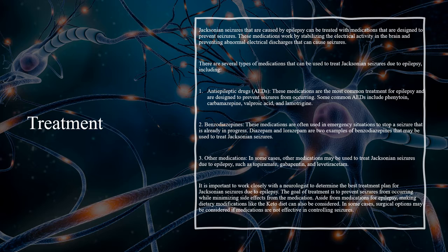It is important to work closely with a neurologist to determine the best treatment plan for Jacksonian seizures due to epilepsy. The goal of treatment is to prevent seizures from occurring while minimizing side effects from the medication. Aside from medications, making dietary modifications like the ketogenic diet can also be considered. In some cases, surgical options may be considered if medications are not effective in controlling seizures.